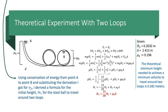I plugged in the derivations for velocity from the previous steps and got that the height should be 15 over 28 times h2 plus μk times the distance the ball travels. Using a loop diameter h2 of 0.2032 meters, a distance of 2.413 meters, and μk of 0.196, I got that the theoretical minimum height should be 0.582 meters.